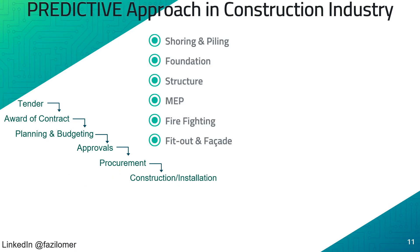Construction and installation activities will be started at the site, such as shoring and piling, foundation works, structure works, mechanical, electrical and plumbing works, firefighting works, fit-out and facade works, based on the baseline schedule program. There will be several dependencies between each of the tasks with or without float, such as finish-to-start, finish-to-finish, start-to-finish, and start-to-start. The sequence of each activity will depend upon these dependencies.